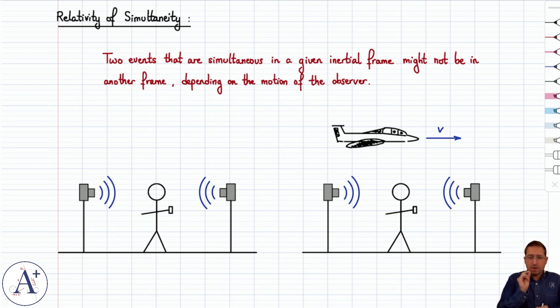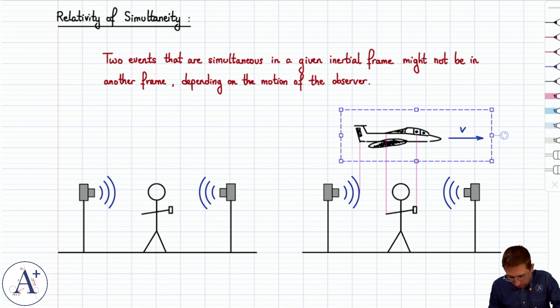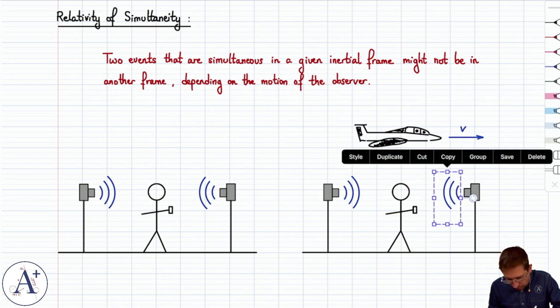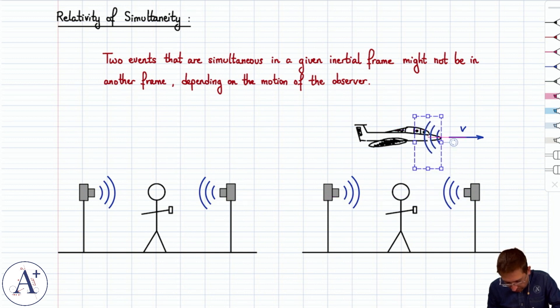But then the tiny amount of time that it takes the light to travel from each camera, this observer is going to move forward a bit. And so what happens is that to this observer, light from the camera in front of him is going to reach him ever so slightly before the light from the camera behind him.